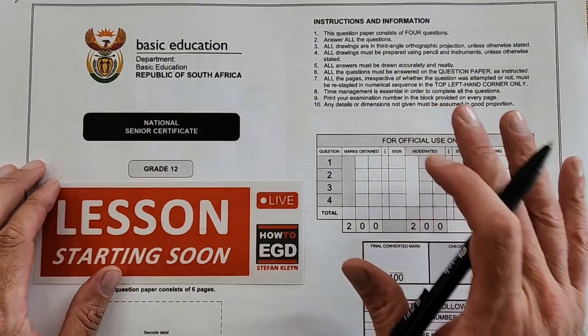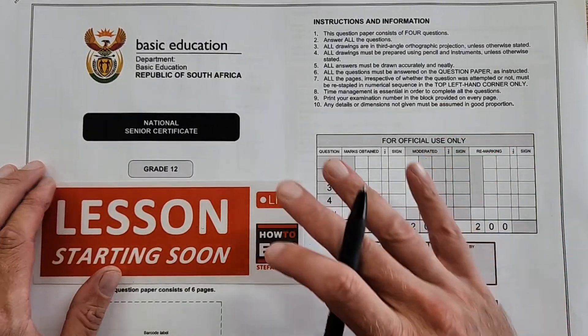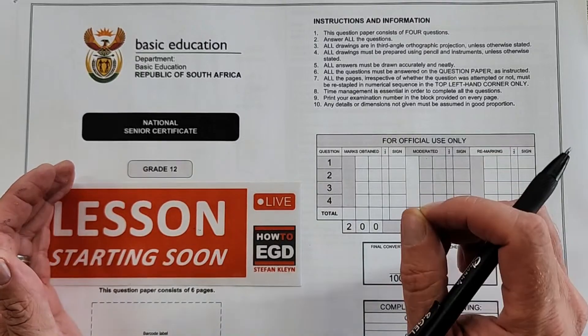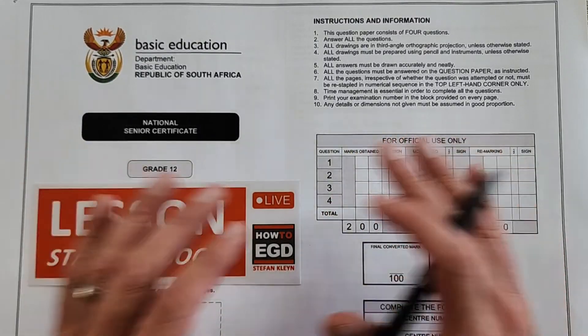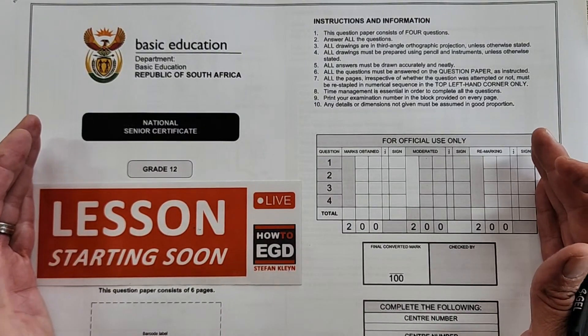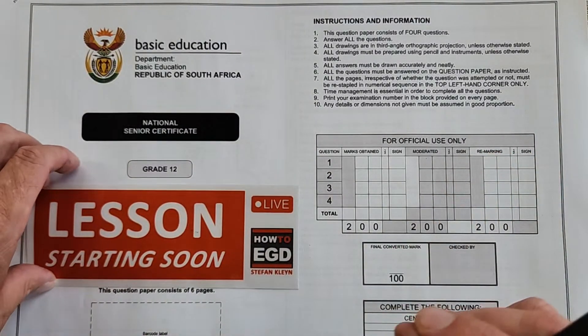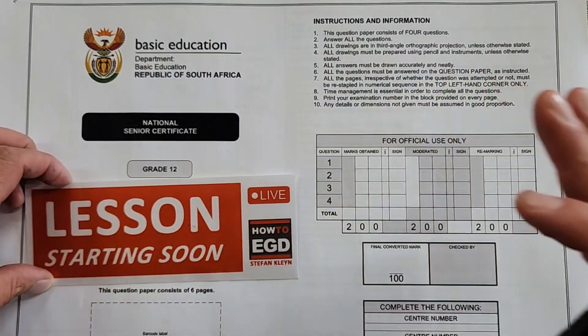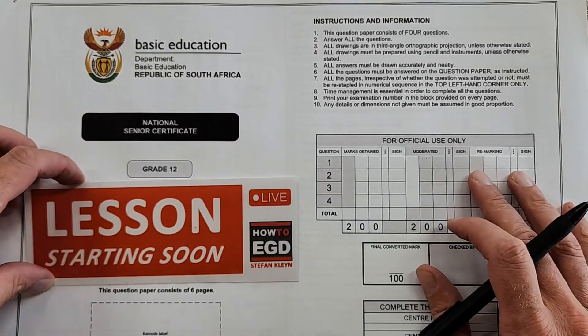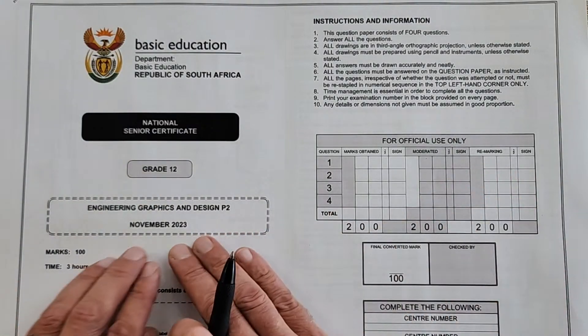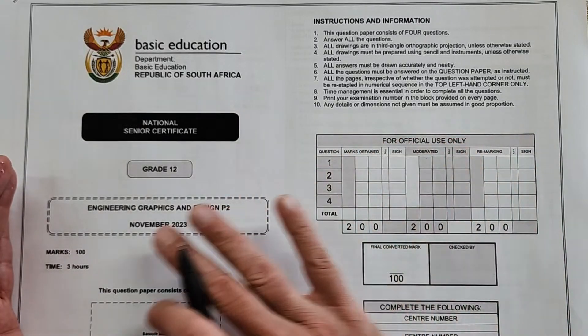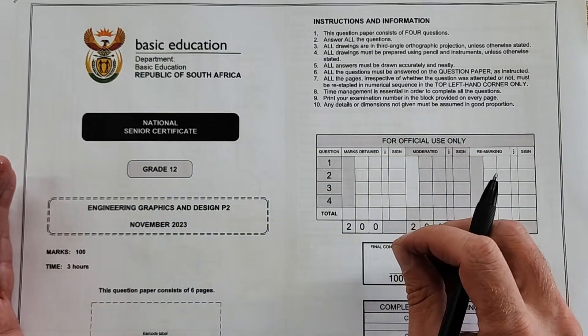Right, Grade 12 Engineering Graphics and Design learners, this is an introduction video to help you understand what you can expect in Paper 2 for this November exams. You would have loved this to be the actual Grade 12 2024 paper, but unfortunately it's not. It is the best I could do to get you as close a view as to what is expected in this upcoming Paper 2. It is the 2023 paper and I'm going to take the next few minutes to page you through all drawings that you can expect also in your exam.